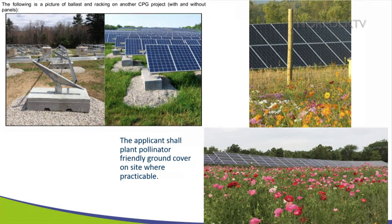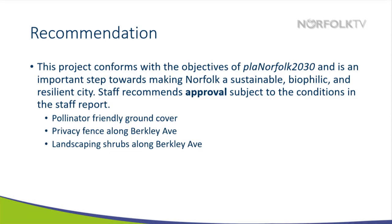The applicant is also going to plant pollinator-friendly ground cover on site where practicable. We believe this is the first solar-friendly landfill in Virginia. The project conforms with the objectives of Plan Norfolk 2030 and is an important step towards making Norfolk a sustainable, biophilic, and resilient city. Staff recommends approval subject to conditions in the staff report, which include the pollinator-friendly ground cover, a privacy fence to be installed along Berkeley Avenue, and landscaping shrubs along Berkeley Avenue. Those were not shown in the rendering due to issues with the waterline for the fire hydrant and existing stormwater drains on site, but the applicant has agreed to those conditions.